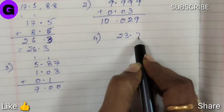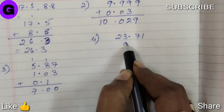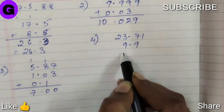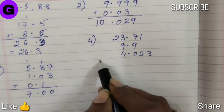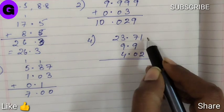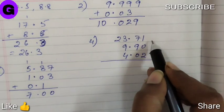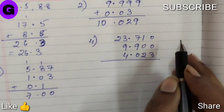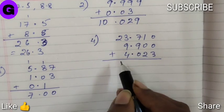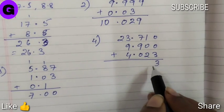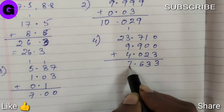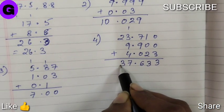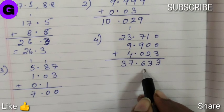Sum number four, 23.71, 9.9, 4.023. So this vacant place will be mere zero, nothing else. So let us add 37.633.